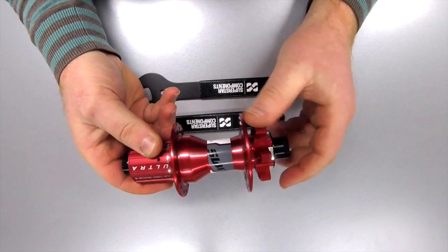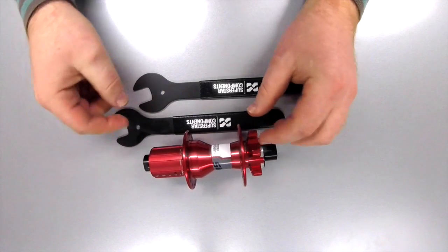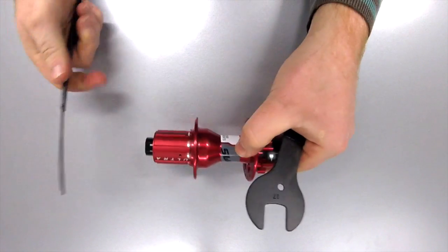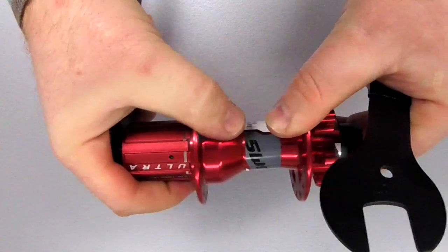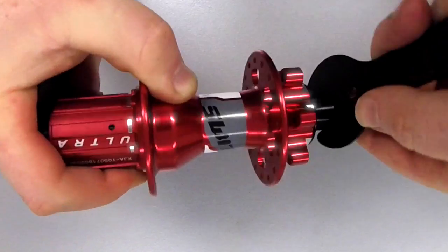Here you've got a rear hub fitted with a 142 adapter. They're very easy to service. All you need to do is take two 17mm cone spanners on the slot at the end and loosen off the axle.